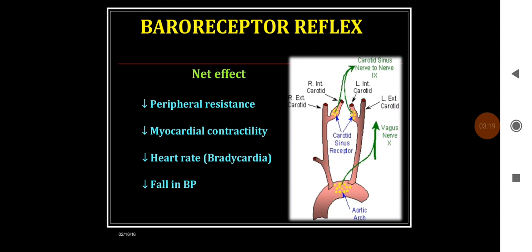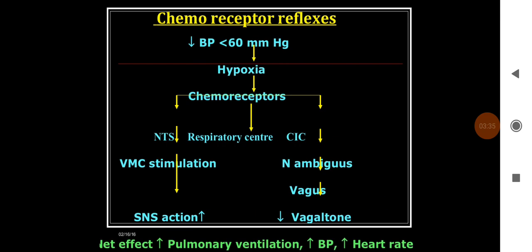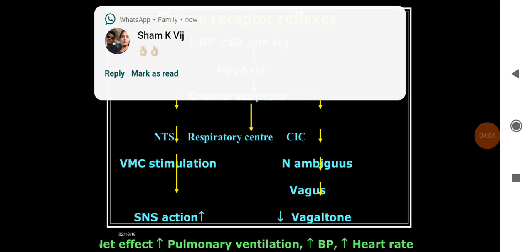The net effects of the baroreceptor reflex are decreased peripheral resistance, decreased myocardial contractility, decreased heart rate, and decrease in blood pressure. The baroreceptor reflex works at blood pressures of 90 to 120 mmHg and it happens within a few seconds. Chemoreceptor reflexes operate when blood pressure falls less than 60 mmHg and down to 30 mmHg.